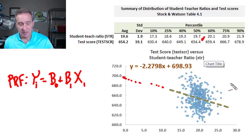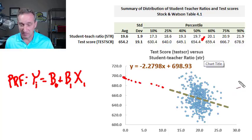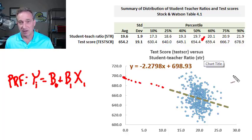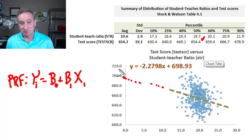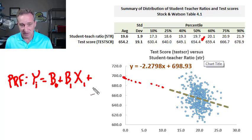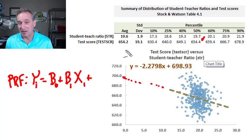The population is so large that we can't actually get all that data. For example, if we were working with data on people in the United States, that population is over 300 million — we would typically conduct a sample from that population. With the population regression function, I've left off a key term whose expected value is zero by construction.